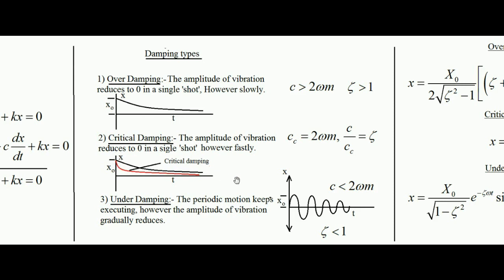In under damping, the particle will keep on vibrating. Under damping is the case when the damping coefficient is less than 2ωm or ζ < 1. The particle keeps on executing SHM; however, the amplitude continuously keeps on reducing — highest amplitude, then lower, then lower, then even lower. Under damping is a periodic motion, and in this vibrating manner the amplitude ultimately reduces to zero.